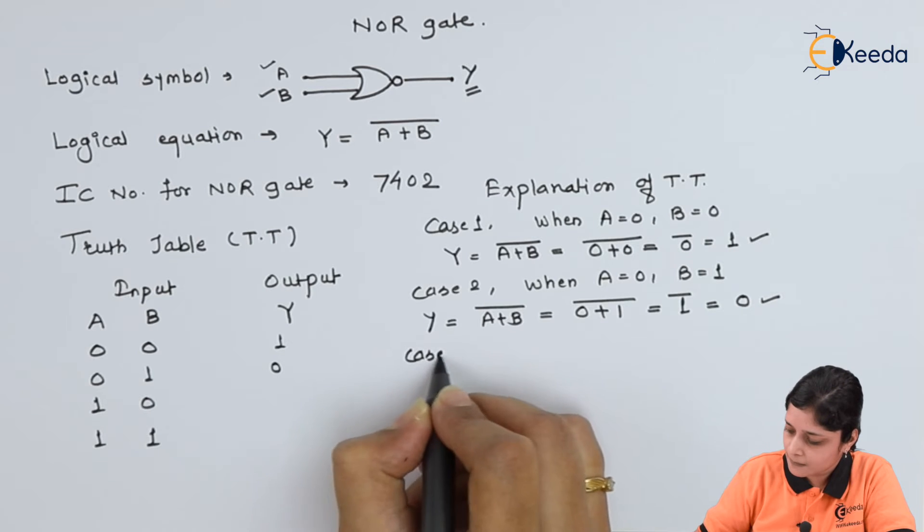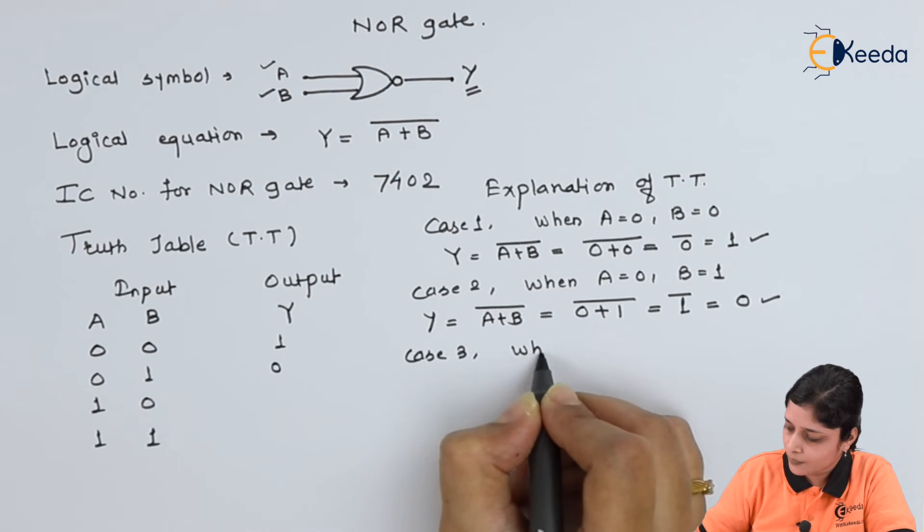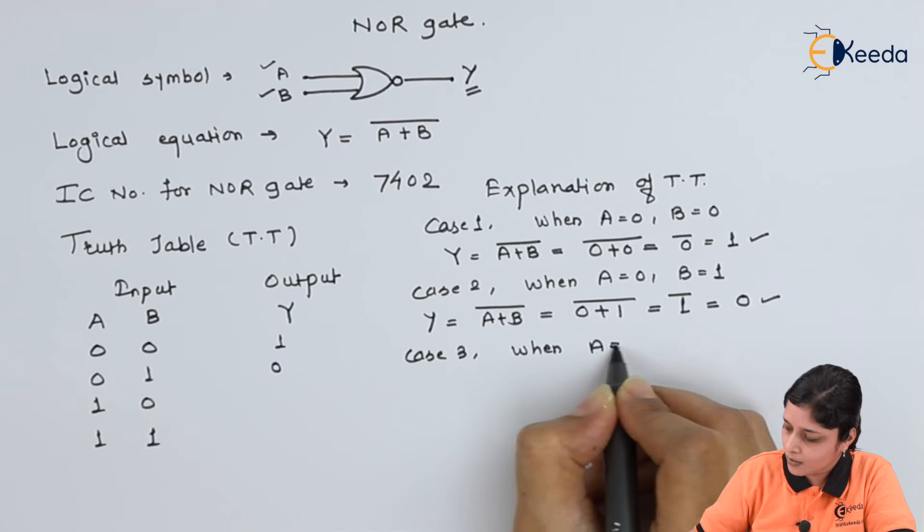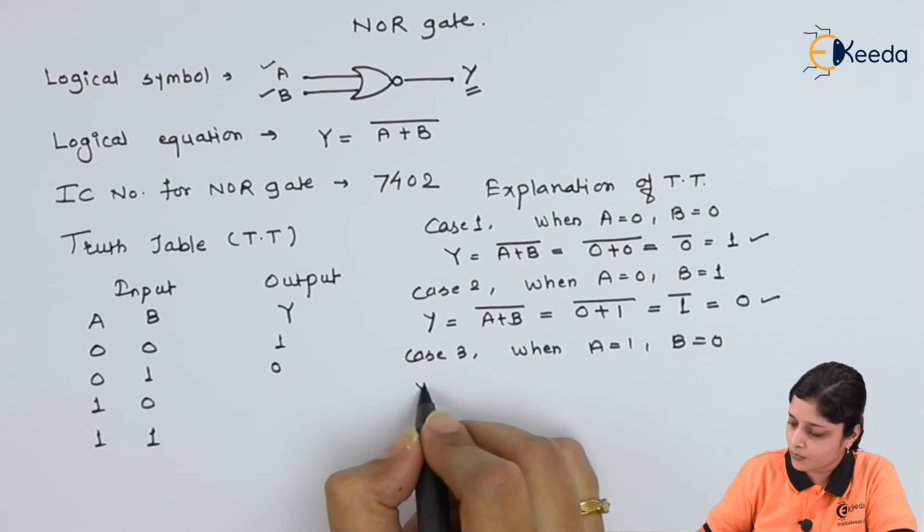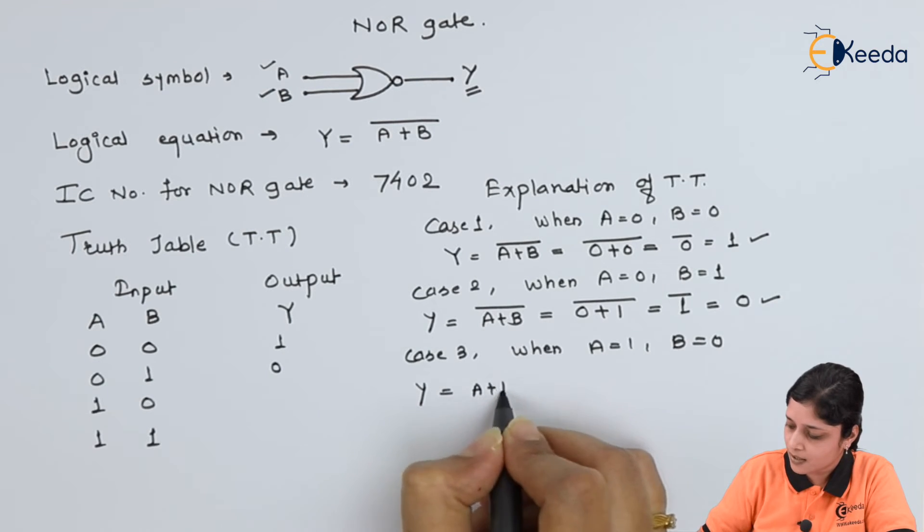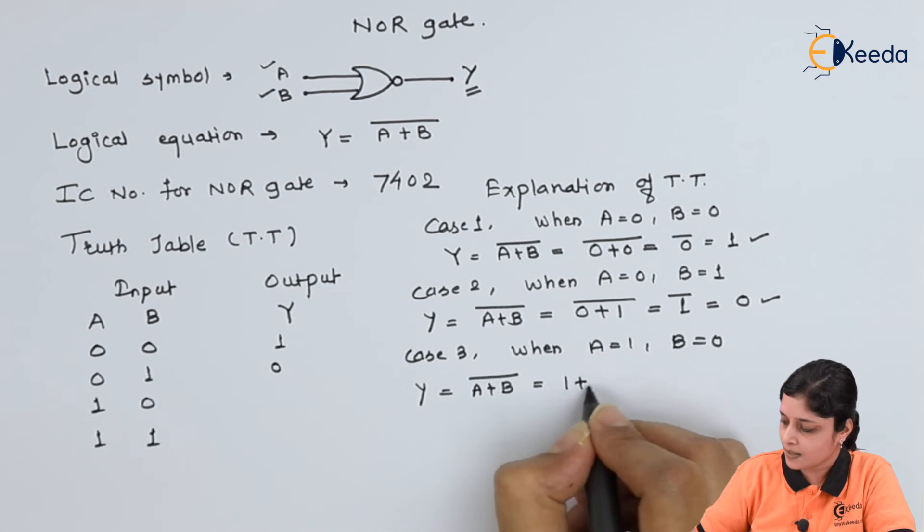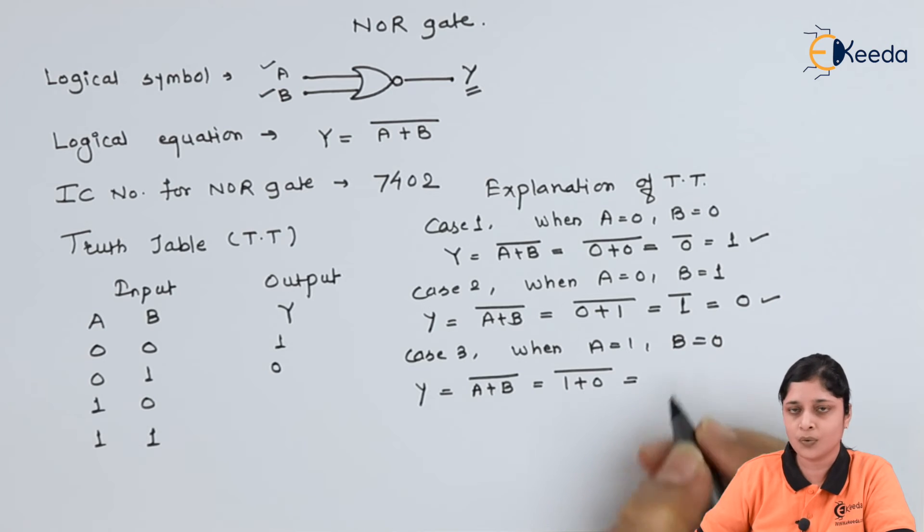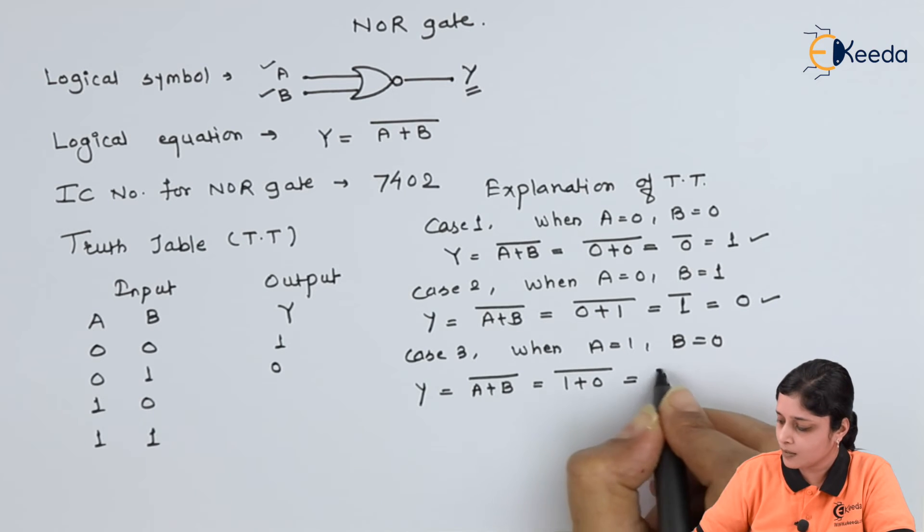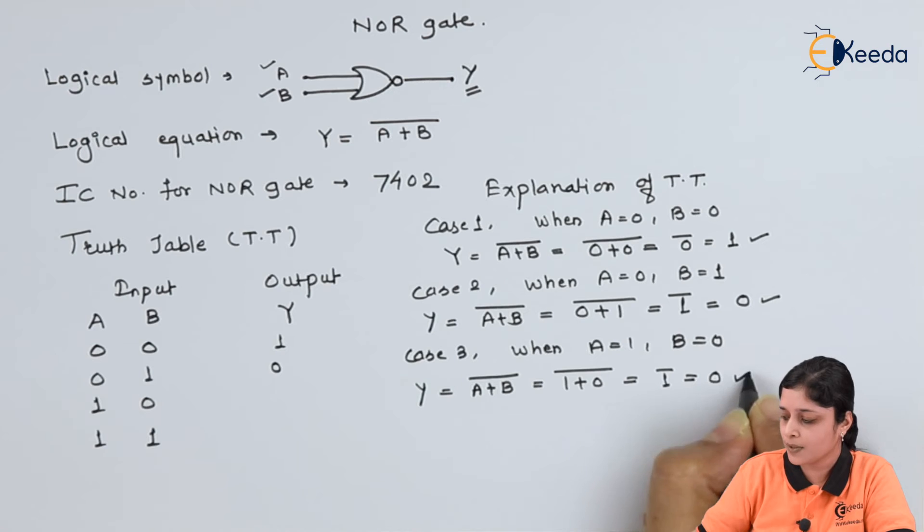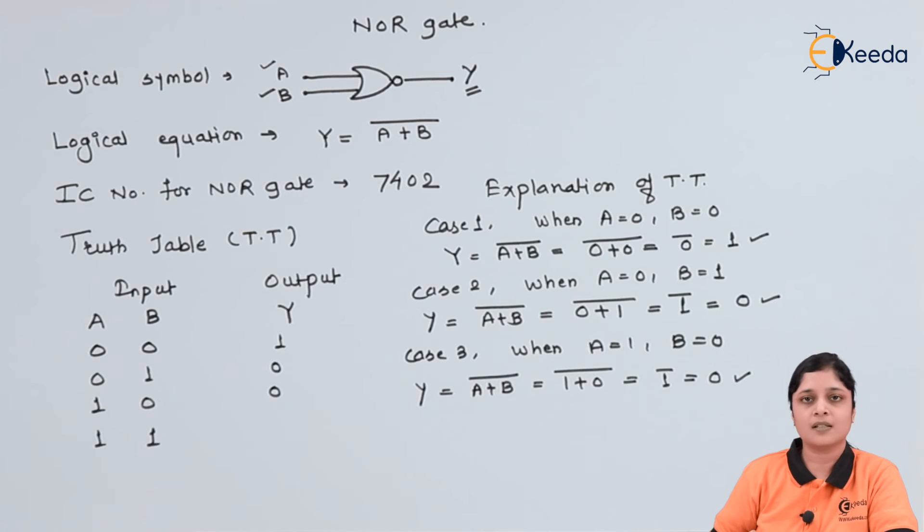Case 3, when A equals to 1, B equals to 0, logical equation is A plus B bar. So 1 plus 0 bar will give you 1 plus 0 is 1 bar will give you 1 complement. 1 complement is always 0.